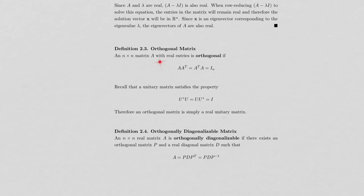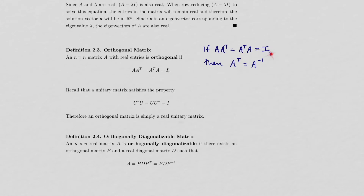An n-by-n matrix A with real entries is orthogonal if AAᵀ = AᵀA = I. Recall that unitary matrices satisfy U*U = UU* = I, so an orthogonal matrix is simply a real unitary matrix. Consequently, Aᵀ = A⁻¹ for any orthogonal matrix. An n-by-n real matrix A is orthogonally diagonalizable if there exists an orthogonal matrix P and a real diagonal matrix D such that A = PDPᵀ = PDP⁻¹.